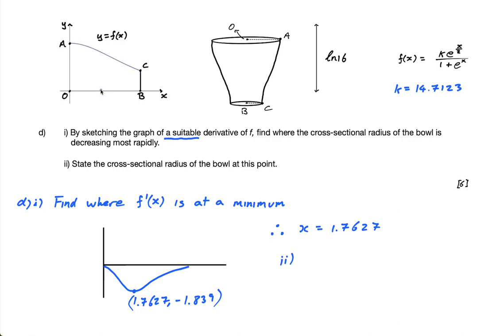so if this is one point, that's the radius. So if this is, let's say, 1.7627, we need to find f of this to find that value. That's the value of the radius, the cross-sectional radius. So I'm trying to find f of 1.7627. I can just put that straight into my calculator.